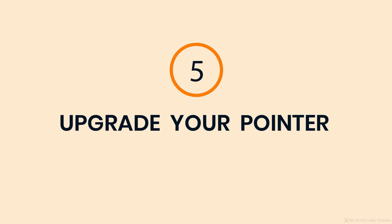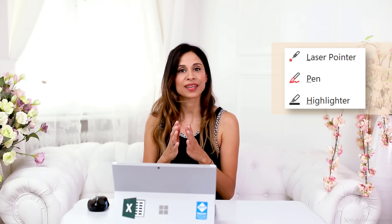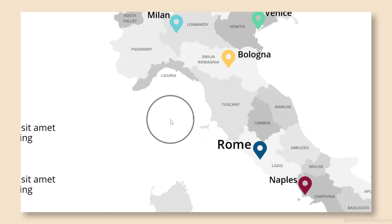Number five: upgrade your pointer. This last tip is less about creating and more about delivering your presentation. If you want your audience to focus on a certain element in your slide, consider using PowerPoint's built-in pointer options. Often I see presenters using the standard mouse pointer, circling around on the slide — but a white pointer on a light background doesn't draw much attention. Instead, you can change it to a laser pointer, or use the pointer to highlight certain elements on the slide.